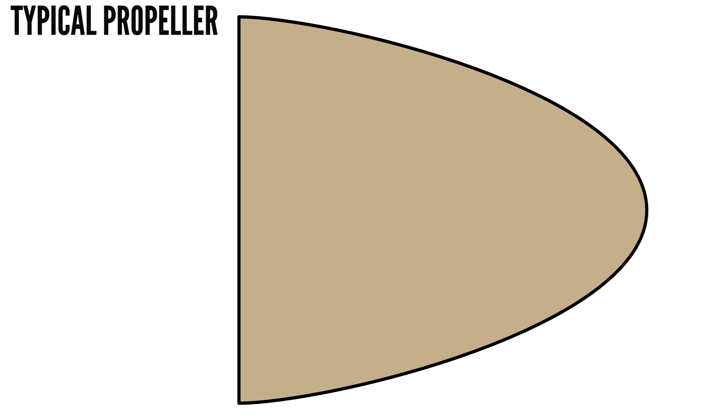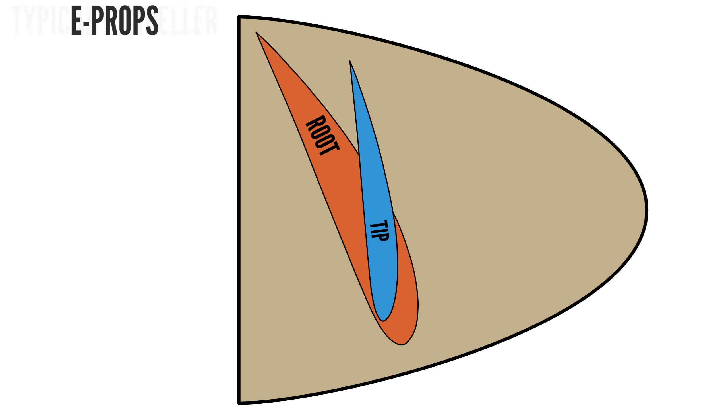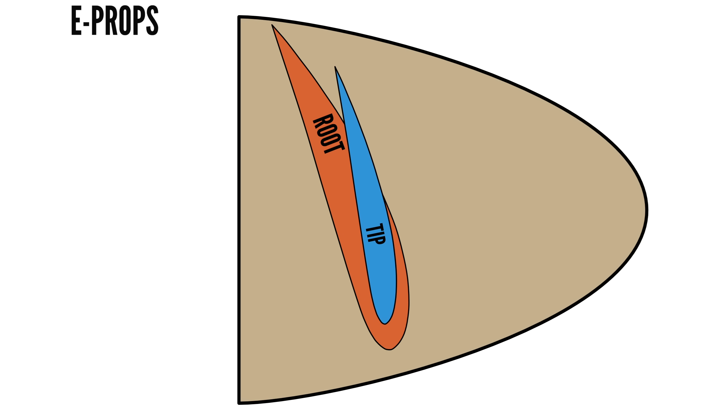This is quite normal, but this contributes to a very narrow effective speed range. On a typical propeller, the change in pitch angle from root to tip can be quite dramatic. On the E-PROPS, designers took a different approach, using a blade design with less twist from root to tip.